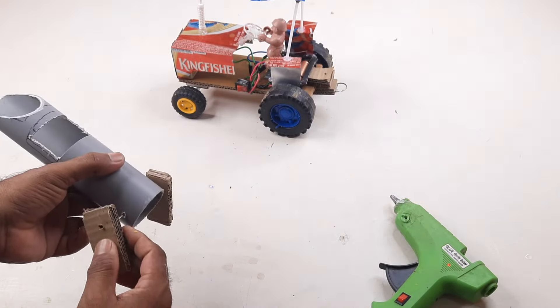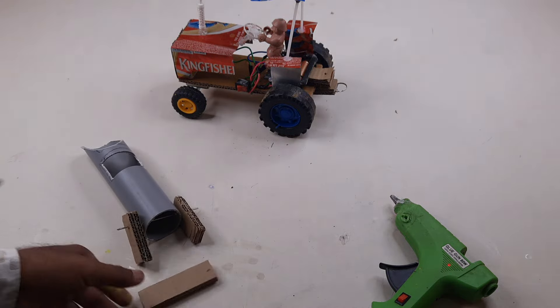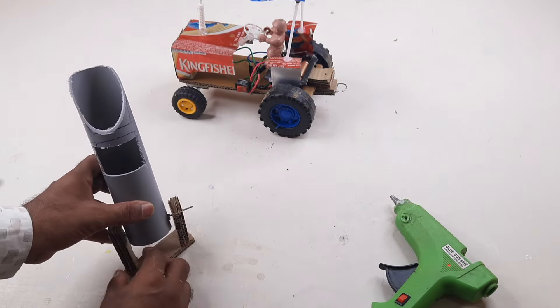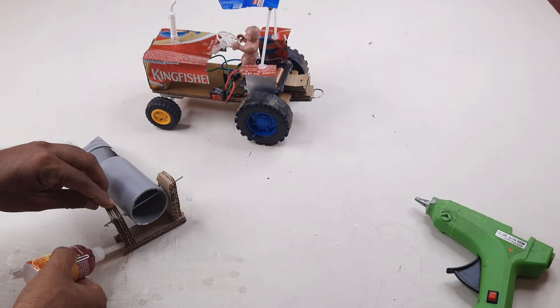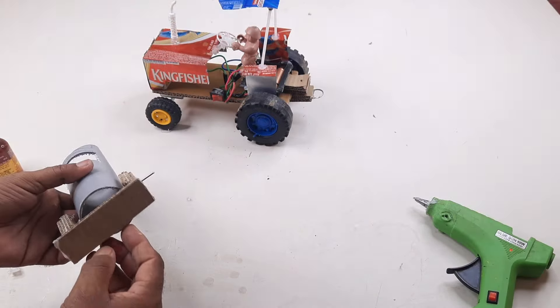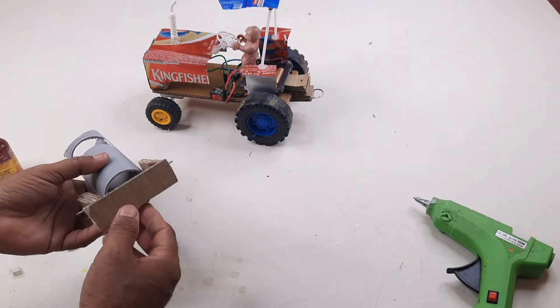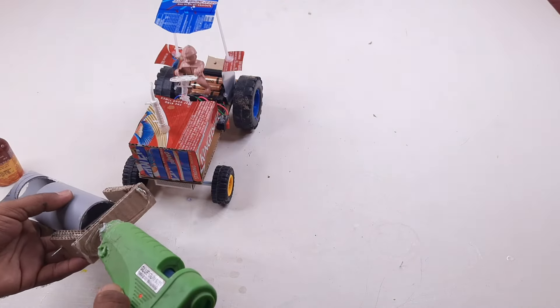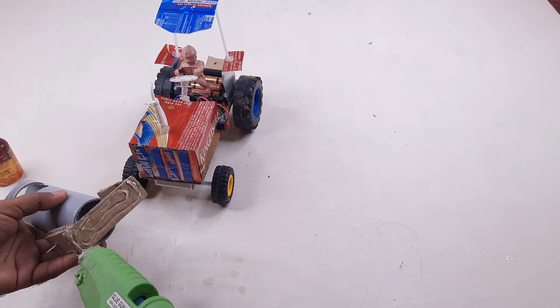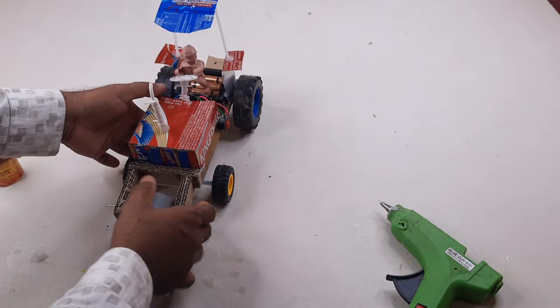It is iron rod. These are cardboard. First we are making the front part of the crane. The front part of the crane is ready. I glued the front part.